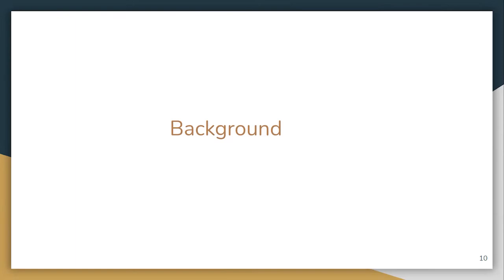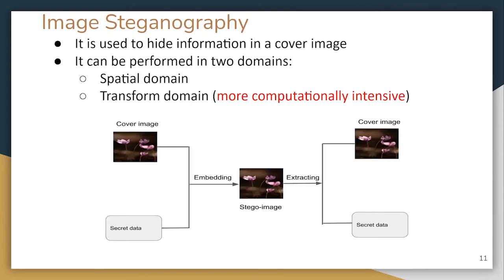As background, image steganography is often used to hide information in a cover image. Secret data are stored invisibly in a cover image to generate a stego image. This stego image can be sent to another party without that third party knowing it contains a hidden message. After receiving the stego image, the secret data can simply be extracted with the key by the receiver.